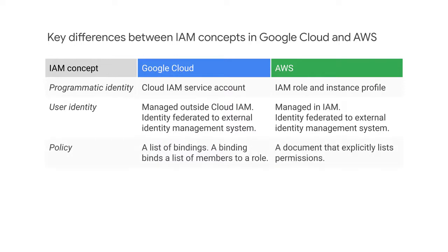For GCP, policies are a list of bindings that set a user's permission by the role applied. Policy documents are used by AWS to apply permissions to users. The document is built using JSON and is applied on the resource. User role pairings on a resource determine a user's permission in GCP. In AWS, predefined permissions can be applied using managed policies, which are pre-built JSON documents used to apply default permissions.